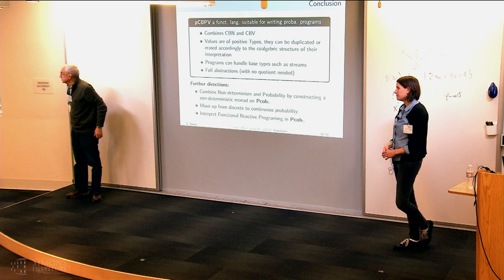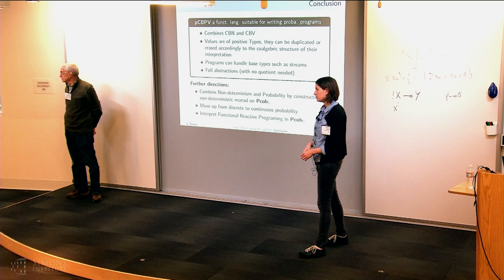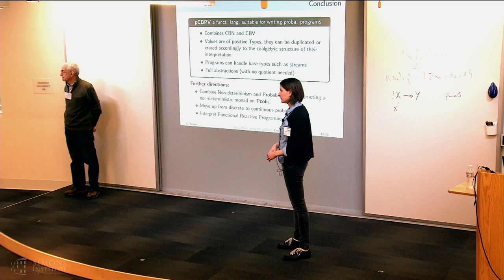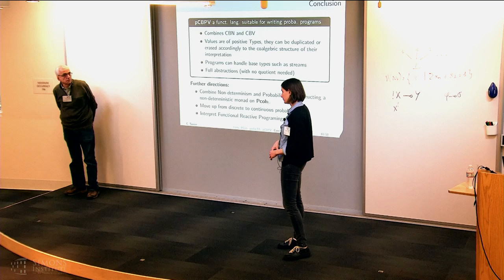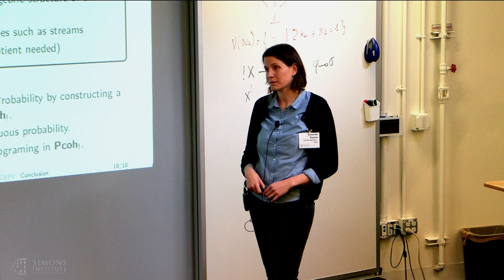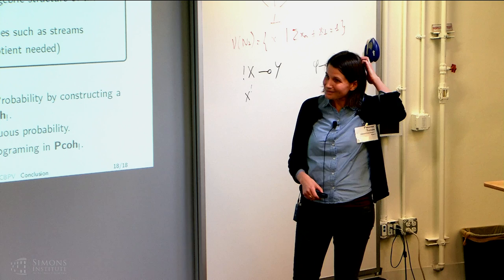From Q&A: Someone observes that in a CPO semantics, trying to achieve full abstraction runs into things like parallel or, which exists in the semantics. In this probabilistic setting, if you do a parallel or, you end up getting negative coefficients — for example, the probability that one of two coins gives heads is 2p minus p squared. It is exactly the absence of negative coefficients which prevents parallelism and gives a fully abstract model.